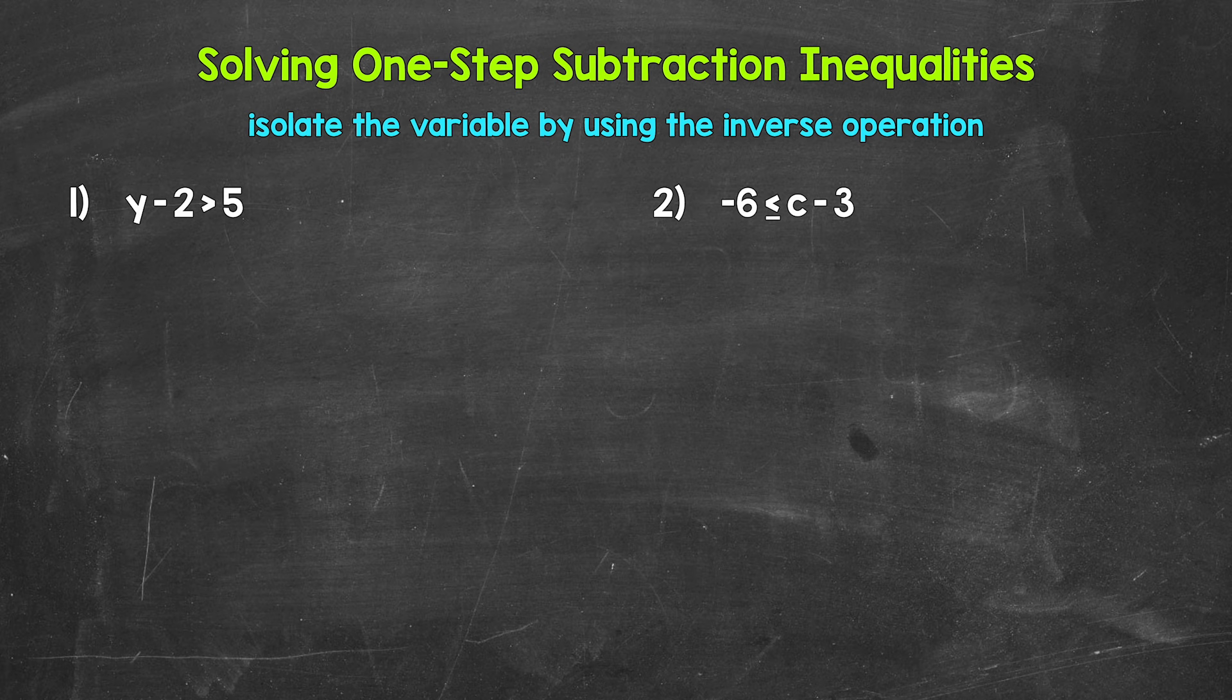Let's jump into number one, where we have y minus two is greater than five. So we need to solve this. We need to isolate the variable of y. Two is being subtracted from y, so we need the inverse operation of subtraction.